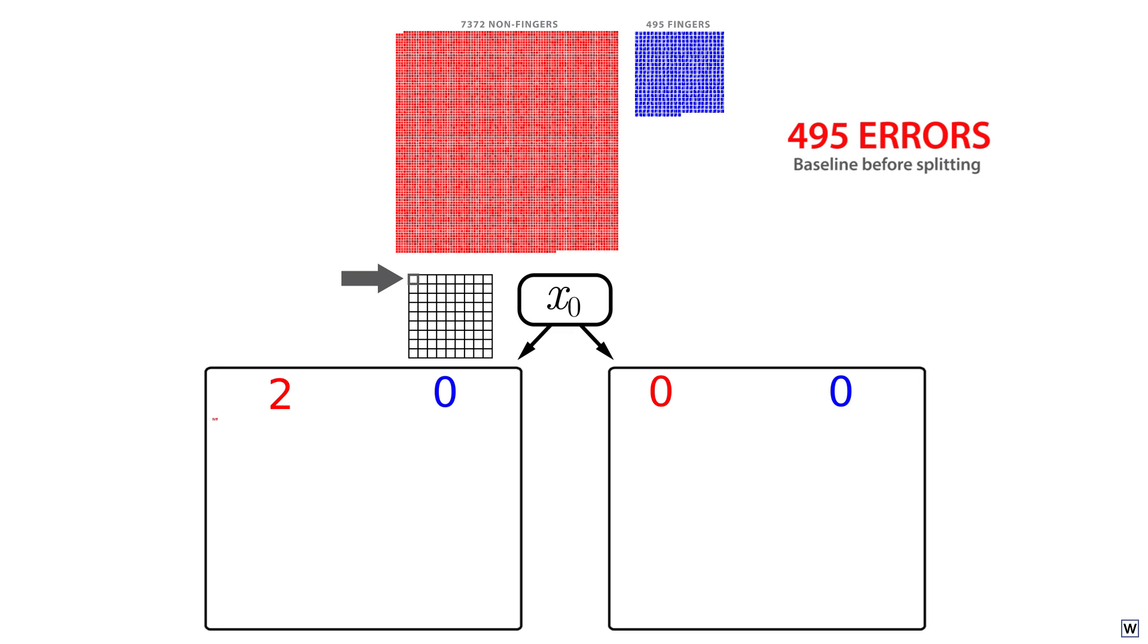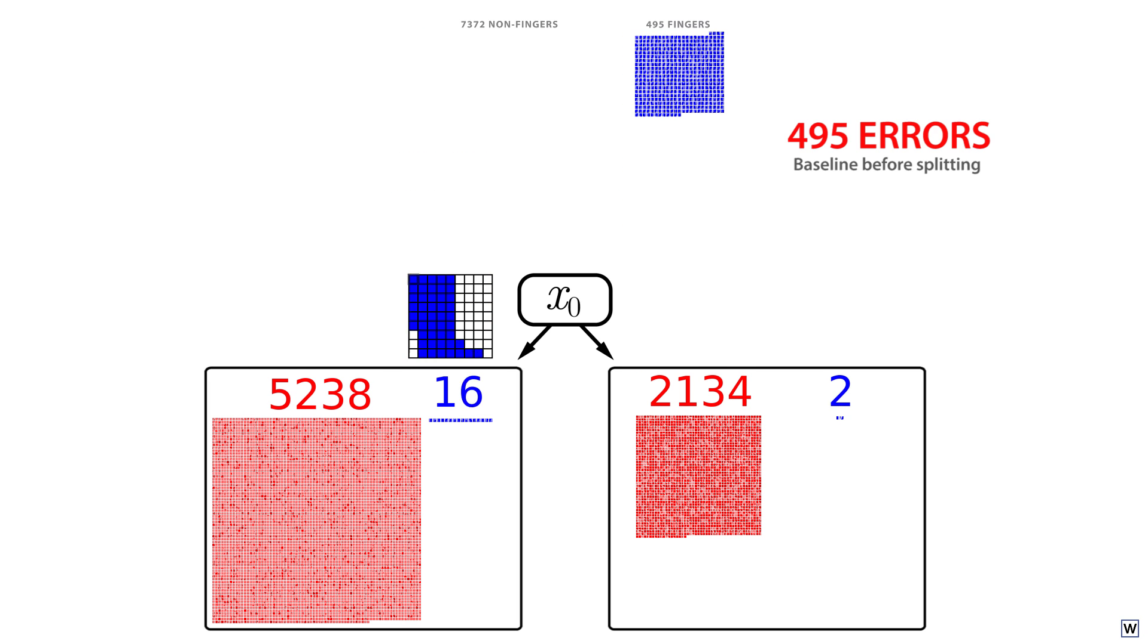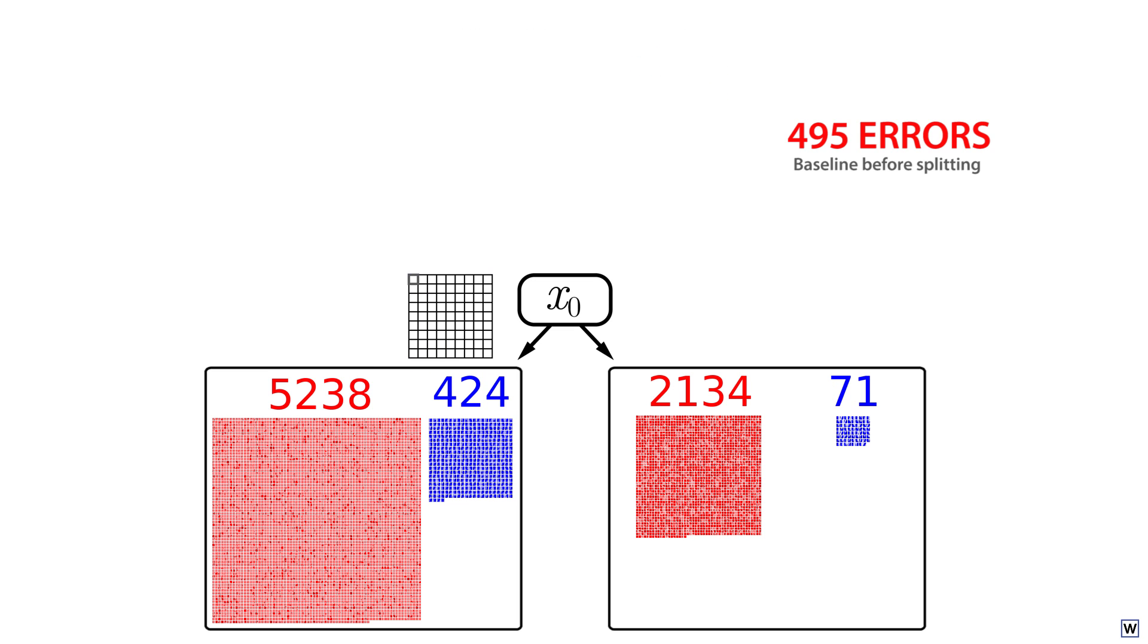And all examples with a 1 in this position will move into our right node. After splitting, we decided to assign each node the label that matches the majority of the examples it contains. The majority of the examples in our left node are negative, so we'll give it a negative label, resulting in a misclassification of the 424 positive examples in this node.